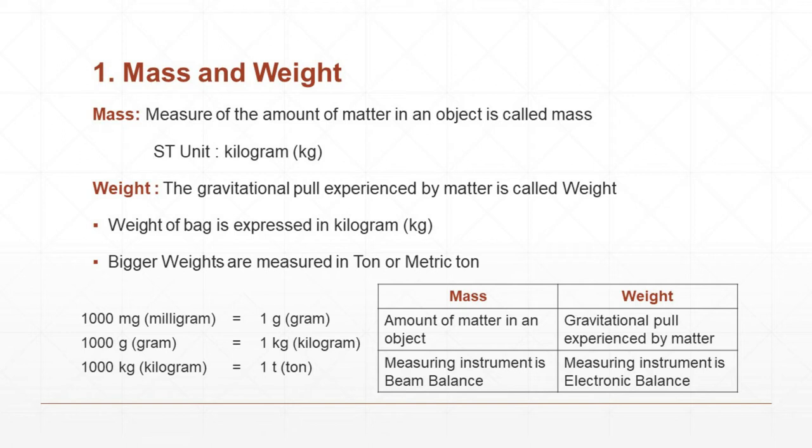Now, let us learn the units. 1,000 milligram is equal to 1 gram. 1,000 grams is equal to 1 kilogram. 1,000 kilogram is equal to 1 tonne.